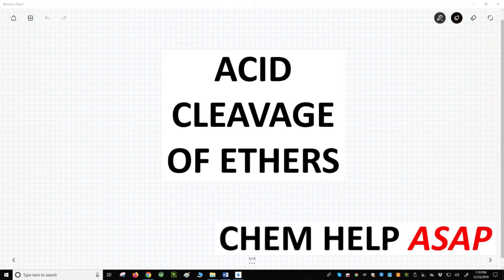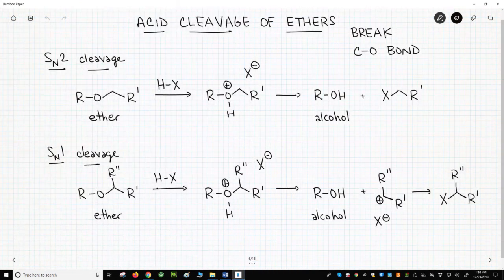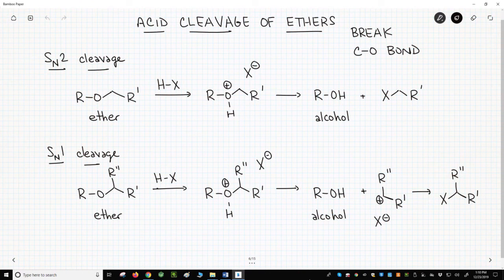Let's see how these functional groups can be forced to react. We have two reactions on the screen that result in the breaking of a CO bond and therefore destroy the ether functional group.